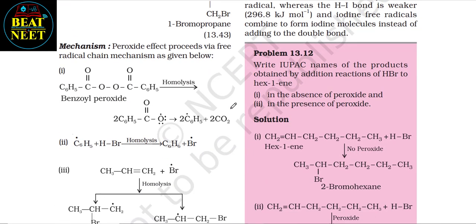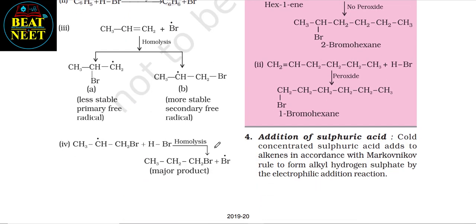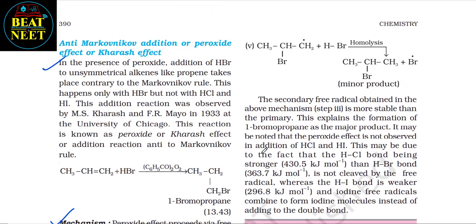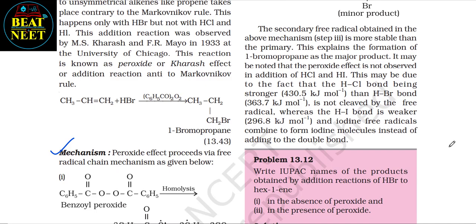The mechanism of this reaction proceeds via a free radical chain mechanism. Here you can see the benzoyl peroxide, its homolysis, and then the formation of less stable primary and more stable secondary free radicals in the third step. In the fourth and fifth steps, the secondary free radical obtained is more stable than the primary. This explains the formation of 1-bromopropane as the major product.